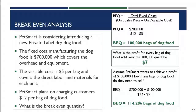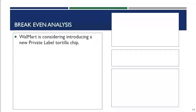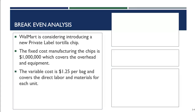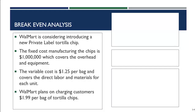This equation gives us a lot of useful information. The retailer now knows how many bags they need to sell at this price to make their profit. For the second example, Walmart is considering introducing a new private-label tortilla chip. Their manufacturing fixed cost is $1 million, variable cost per bag is $1.25, and they plan to charge customers $1.99 per bag — based on market analysis, competitor pricing, and planned future sales price.